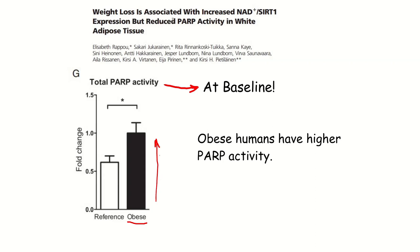This is a second study, just to really show the point. This is no longer in identical twins — it's just a group of obese humans and a group of lean humans. You can see the obese humans have much higher PARP activity, whether or not they're identical twins.